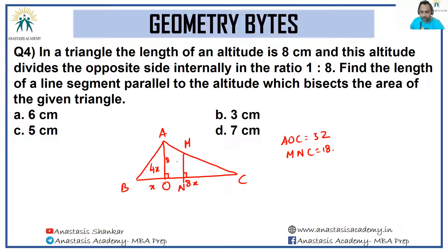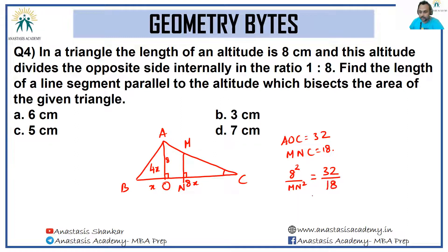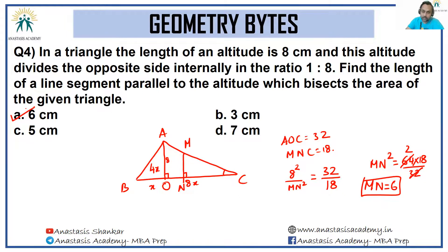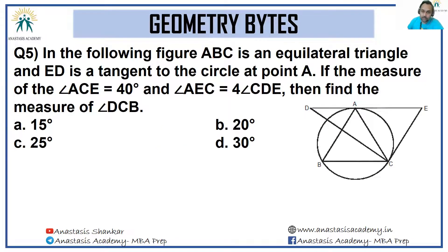Triangles ACO and MCN are similar — they share a common angle and both have 90 degrees. Since the ratio of areas equals the square of the ratio of corresponding sides: 8 squared over MN squared equals 32 over 18. So MN squared = 64 × 18 / 32 = 36, giving MN = 6. The answer is option A.